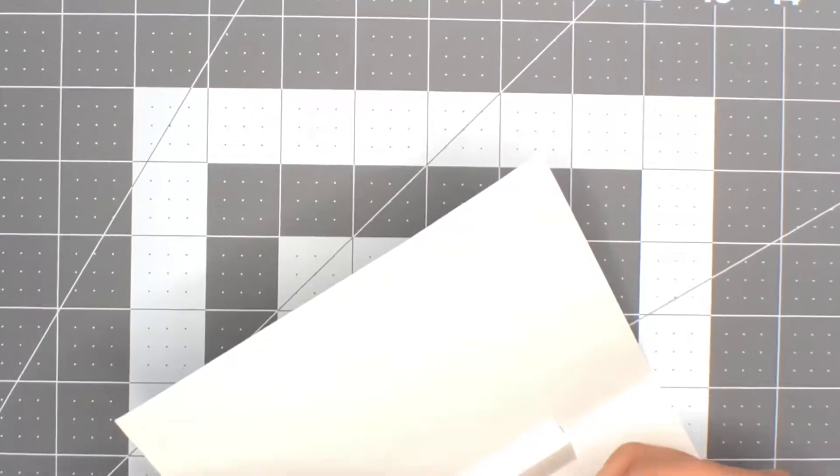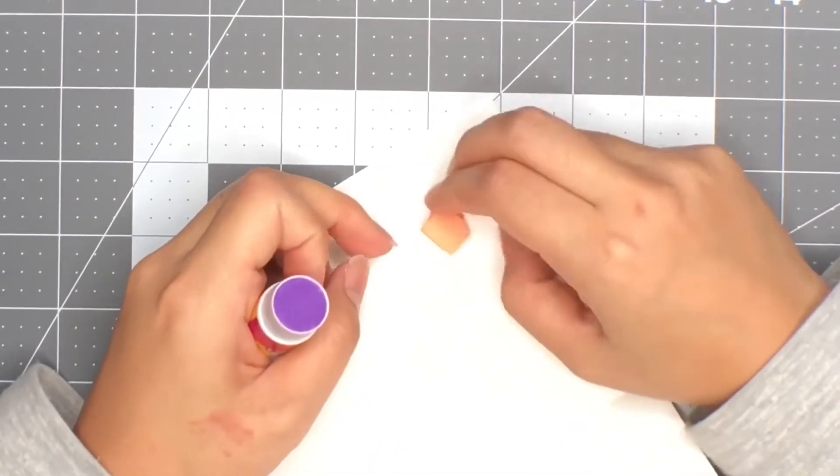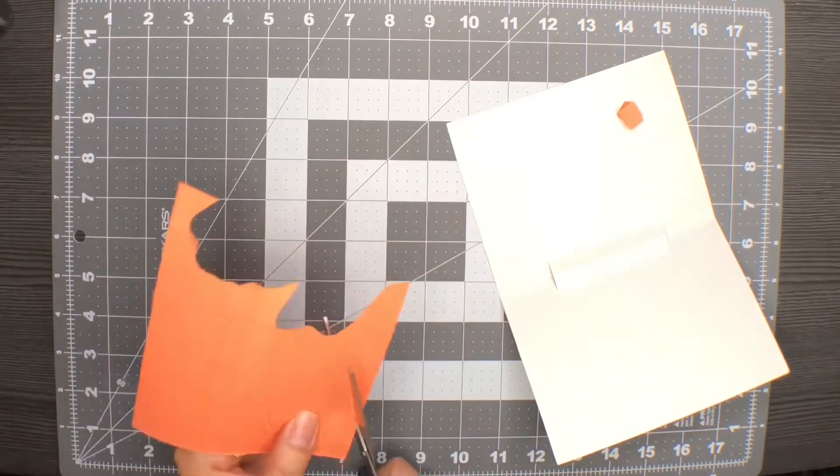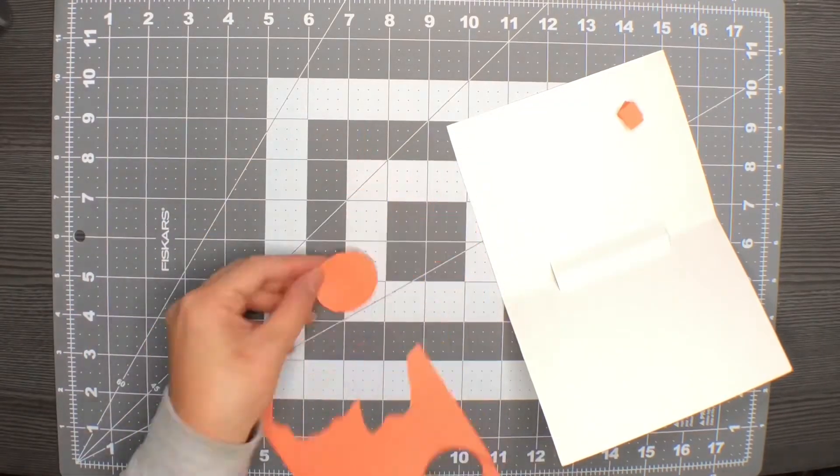Followed by gluing it to the card. Next, we will cut out a circle creating a sun and then gluing it to the spring.